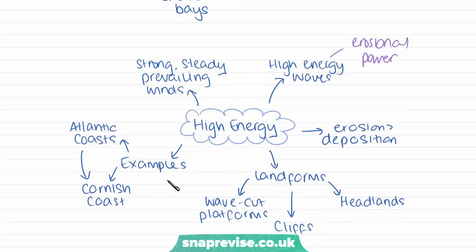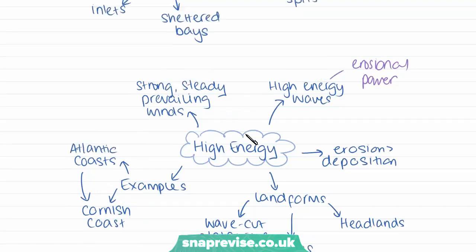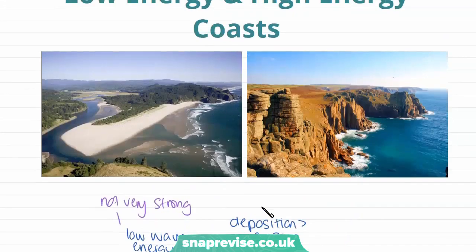Examples of high energy coasts are those surrounding the Atlantic, such as the Cornish coast in England, which is where this photograph was taken, as the Atlantic has very strong wave power due to the winds travelling across it at very high speeds.